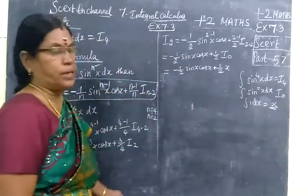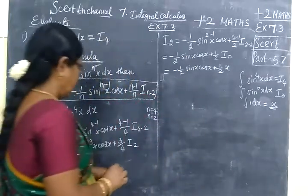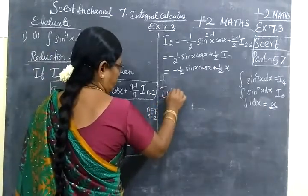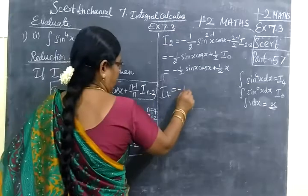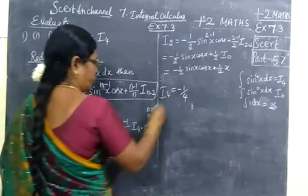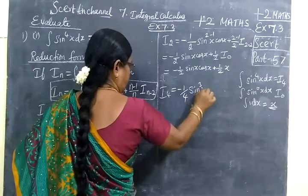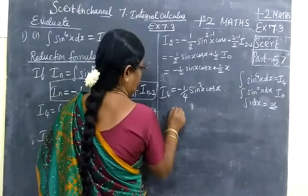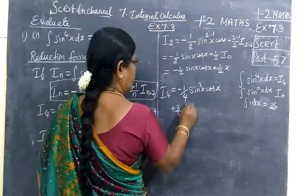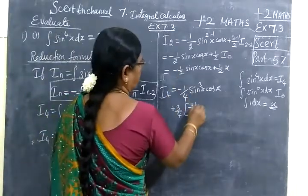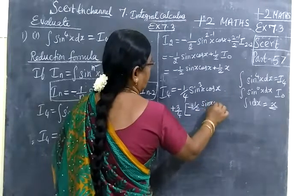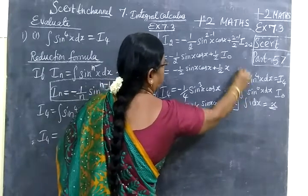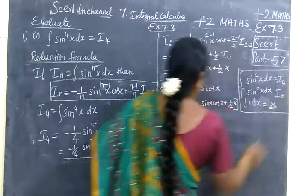So we will substitute. We will substitute I₄. I₄ only we want to find. So I₄ equal to minus 1 by 4 sin³x cos x plus 3 by 4 I₂. Instead of I₂, we are substituting: minus 1 by 2 sin x cos x plus 1 by 2 x.